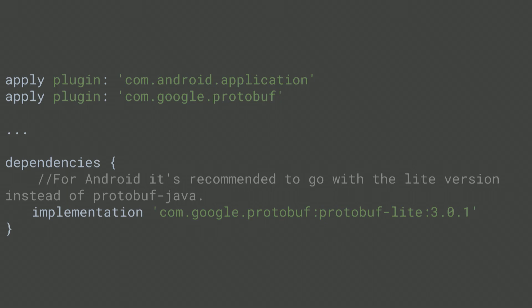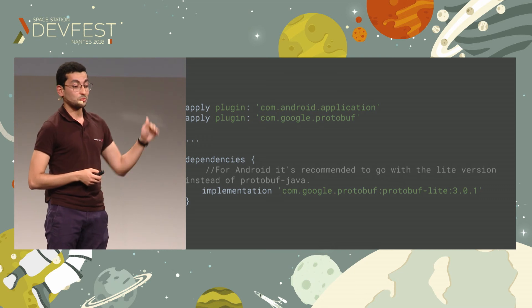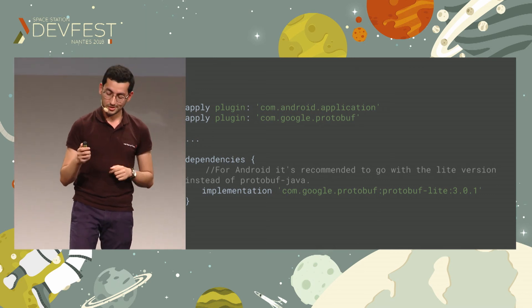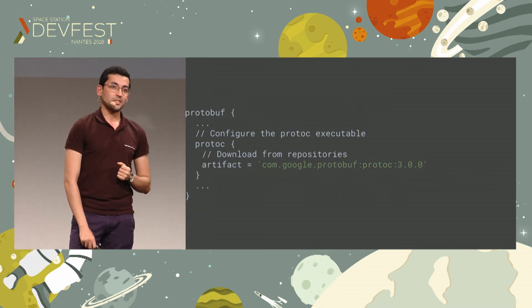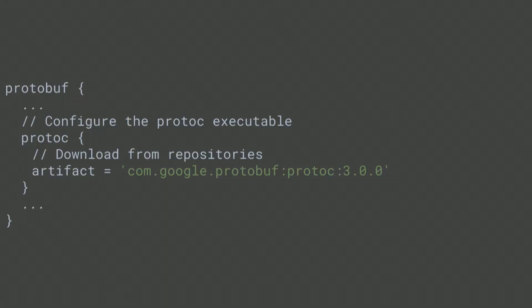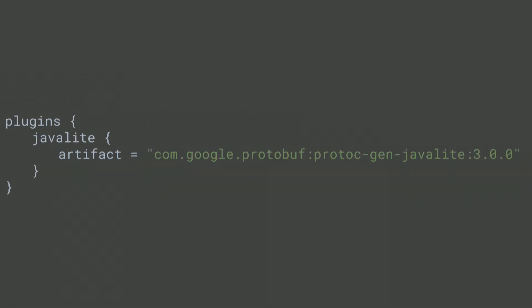First, I had to add the Protobuf Gradle plugin. You have to add and apply it right after the application plugin or the Java plugin, and not before — go figure. Then you have to add the dependency to the compiler — make sure to add the right one: Protoc. Then you add another dependency for code generation, and you have to add the right one. In my case I used Java Lite, which is the plugin recommended for Android.